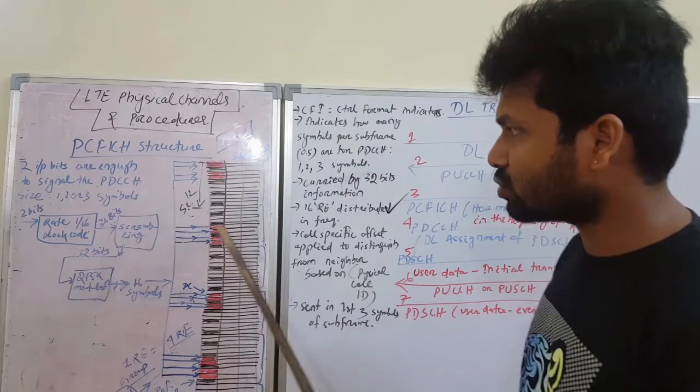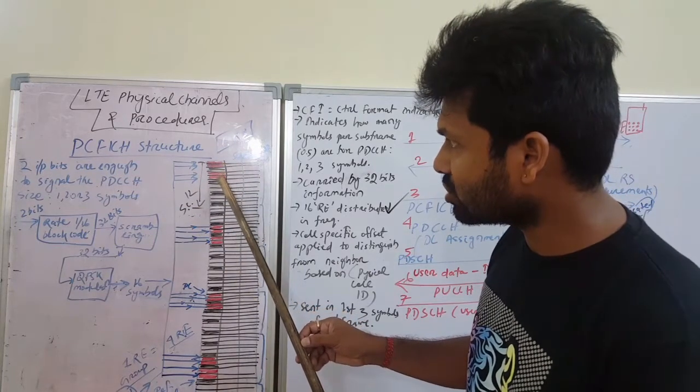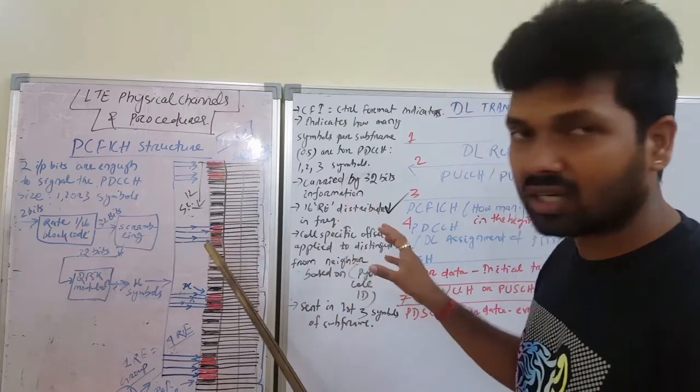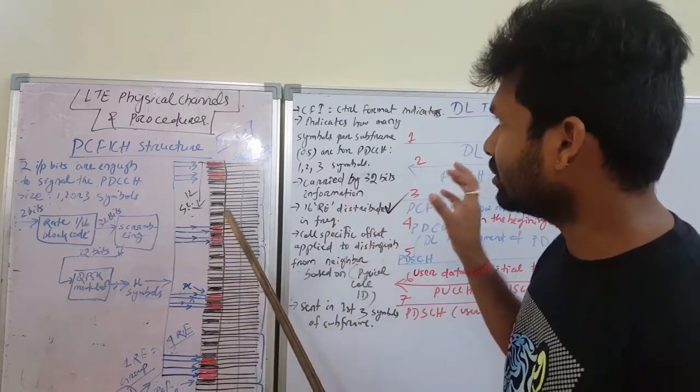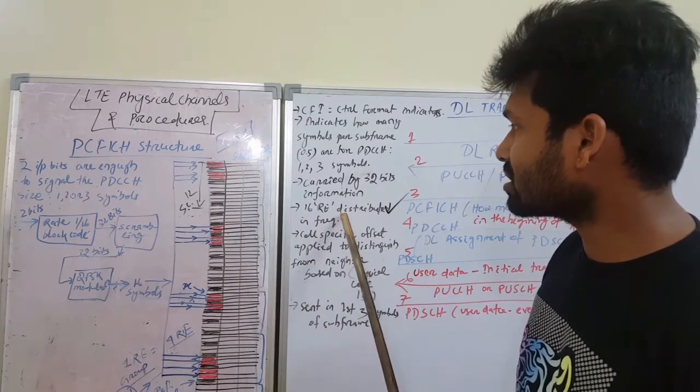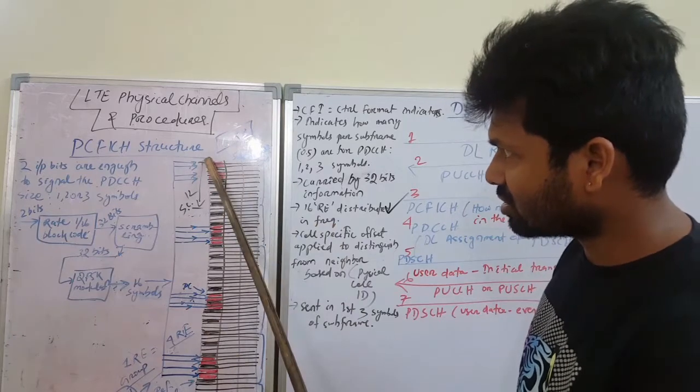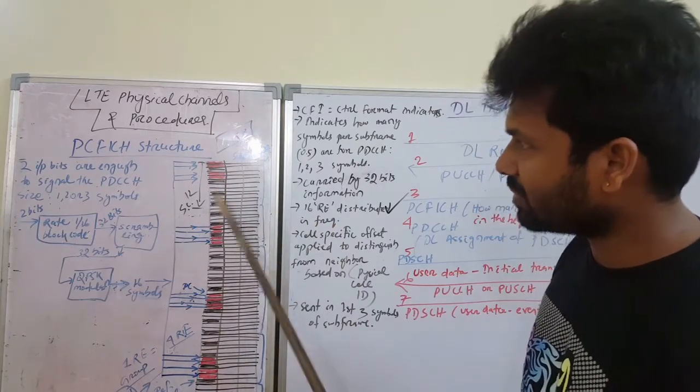These red colored boxes marked here are the resource elements where we are transmitting the PCFICH. So 16 resource elements distributed in frequency. This is total 72 subcarriers